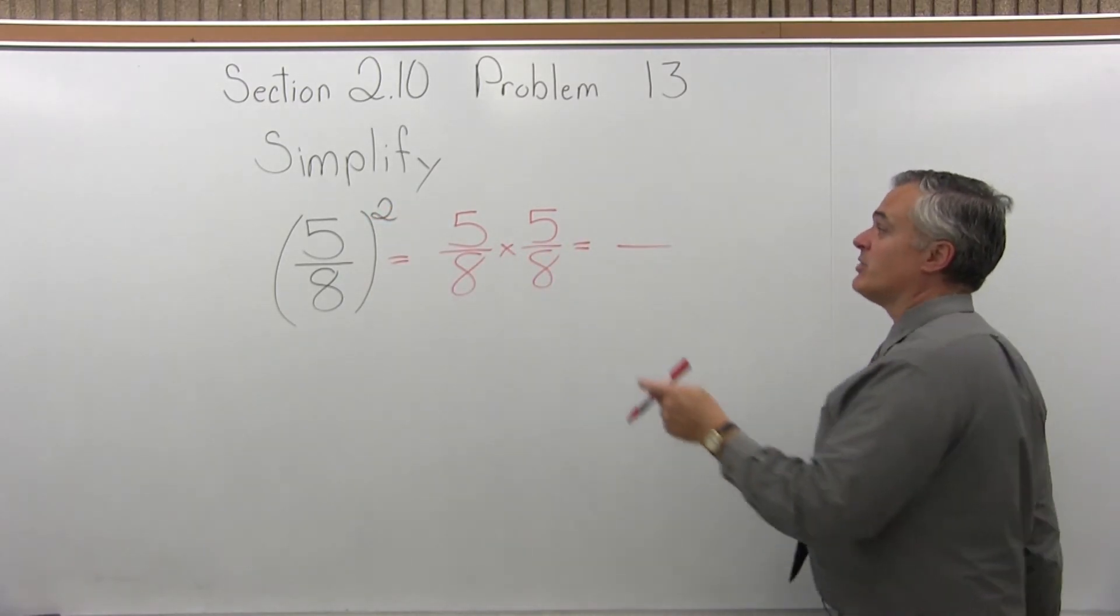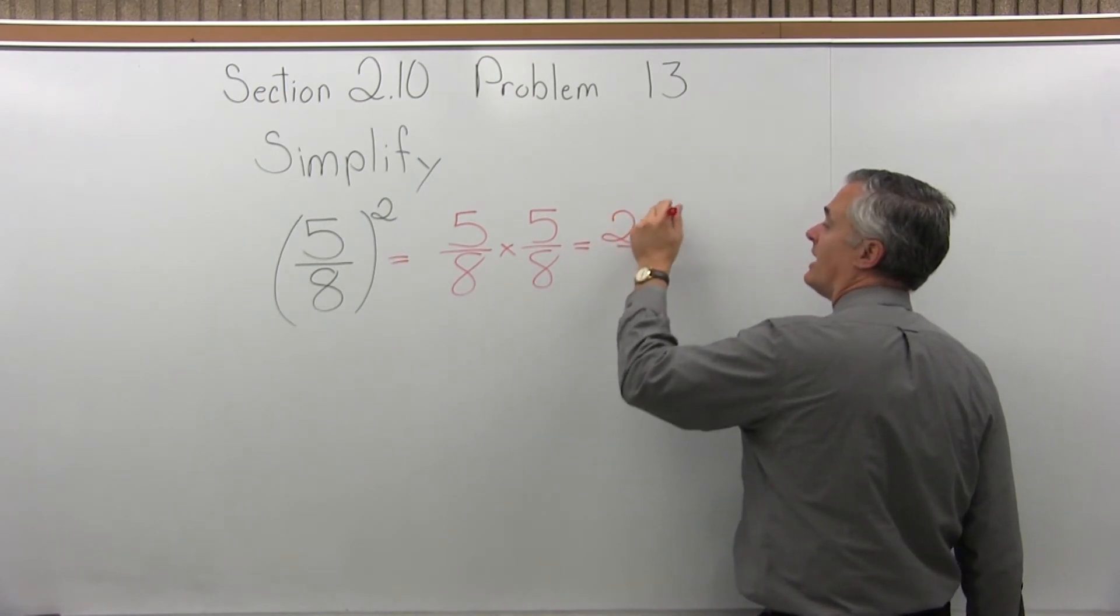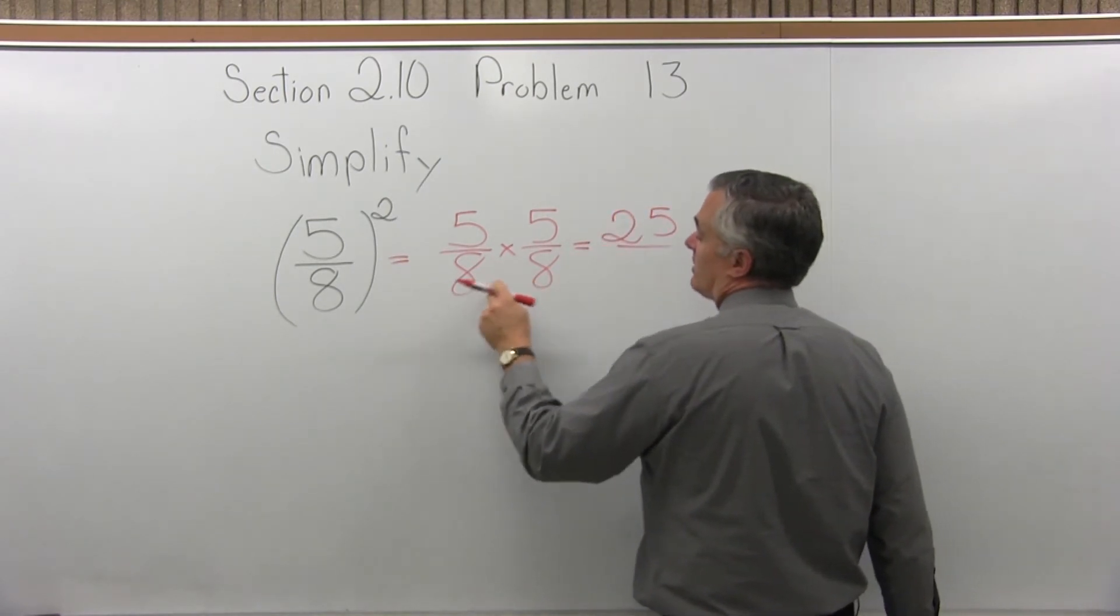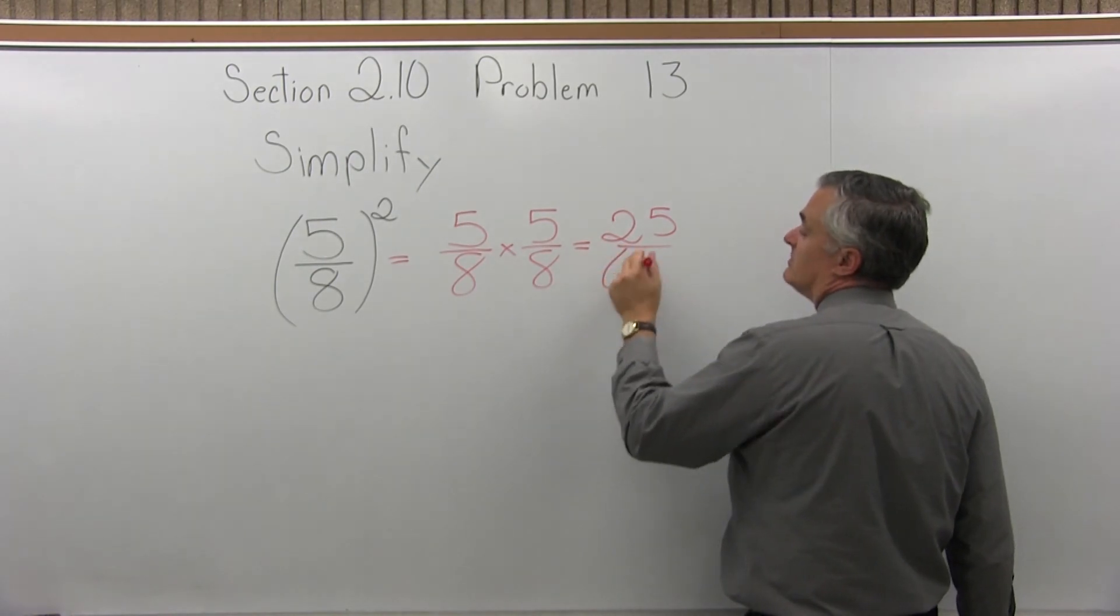When we multiply fractions, top times top will give me 5 times 5, which is 25. And bottom times bottom, 8 times 8, will be 64.